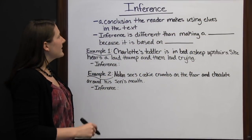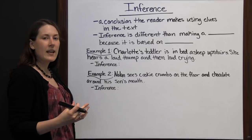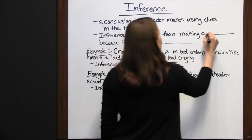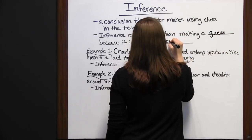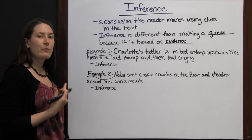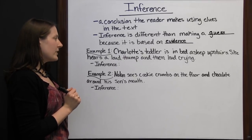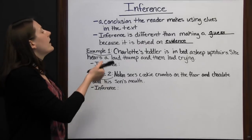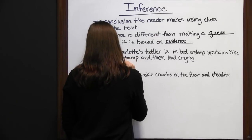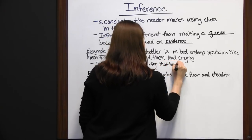Inferences are conclusions that a reader makes using clues in the text. An author may not explicitly say something, but they leave little hints behind and you have to connect the dots to form a conclusion. Inference is different from making a guess because it is based on evidence — you read, pick up on those clues or hints the author leaves behind, and put them together to form your inference. For example: Charlotte's toddler is in bed asleep upstairs. She hears a loud thump and then loud crying. Knowing the toddler is in bed asleep and then hearing a thump and crying, Charlotte can infer that her toddler fell out of bed.